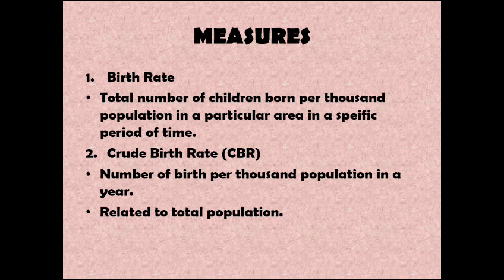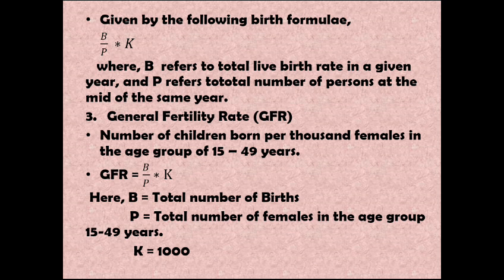Next we have the Crude Birth Rate, or CBR. The crude birth rate is the number of births per thousand population in a year. It is related to total population. In crude birth rate, the time frame is specifically one year, whereas in the general birth rate the time frame was not given.